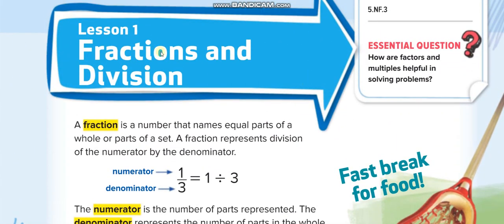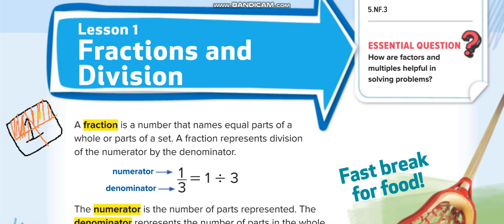First of all, you have to understand what fractions are. Fractions are the equal parts of a whole number. If you have one, that is a whole number — a complete number. But when you divide that one into equal parts and any part is missing, like you just have three parts when you divided the whole into four parts, that becomes a fraction.